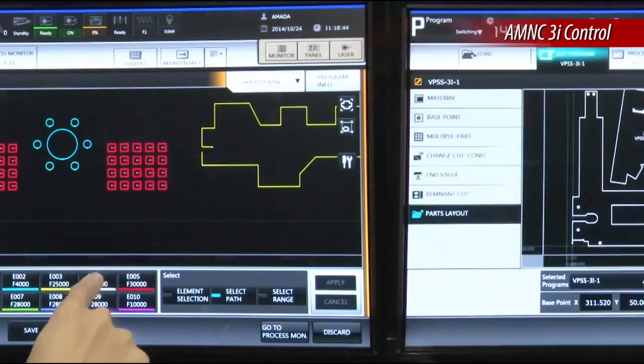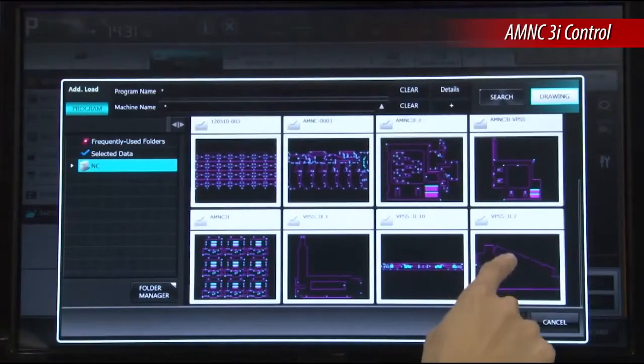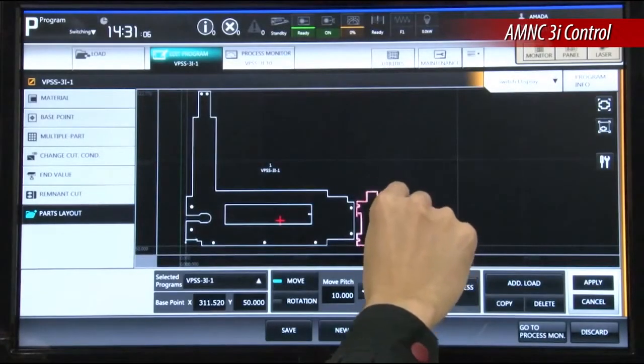It can connect to your company's network and easily retrieve programs generated offline. Thumbnail views of parts and nets provide for quick and easy identification.